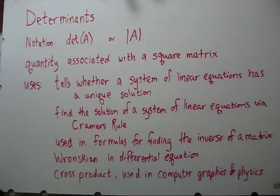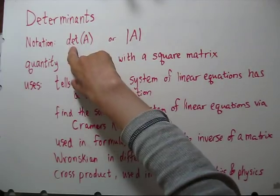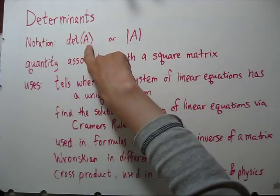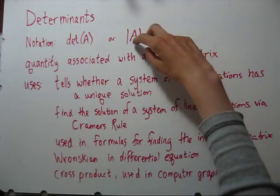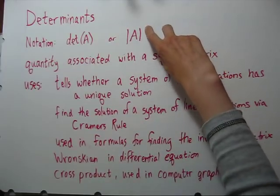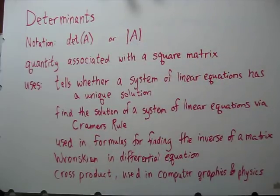Determinants are a quantity associated with square matrices. They're very useful. For notation, you'll see DET and then the matrix in parentheses, or you might see the numbers of a matrix with what looks like absolute value signs around it.